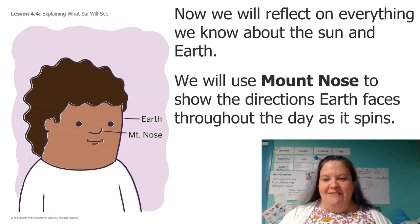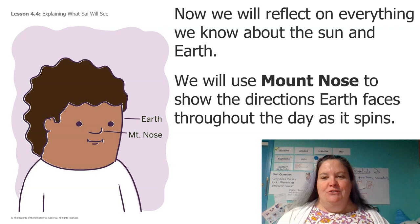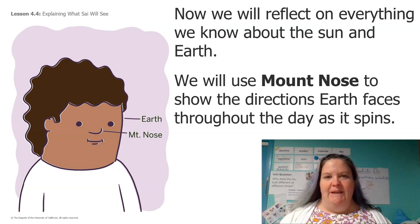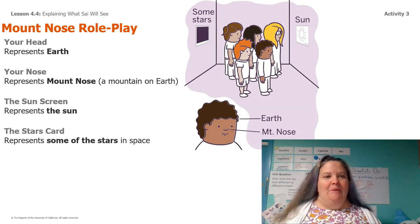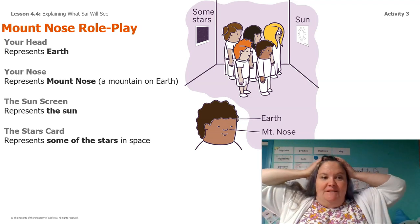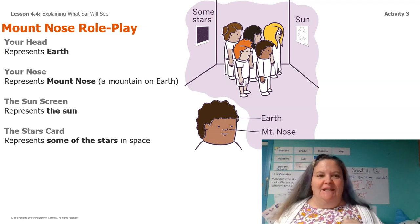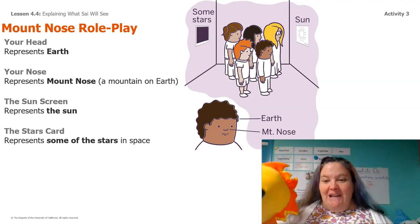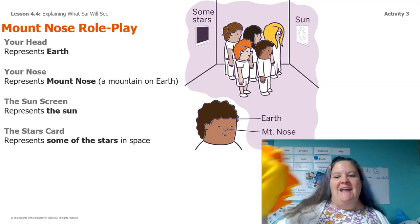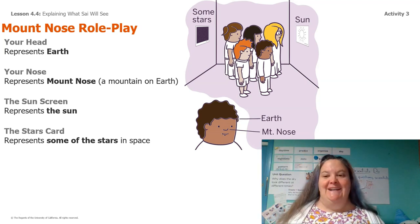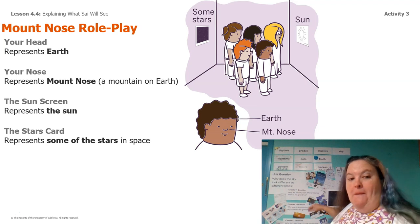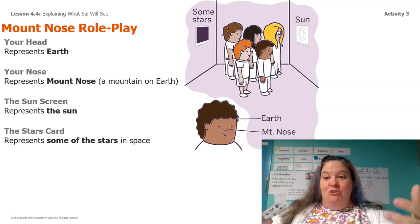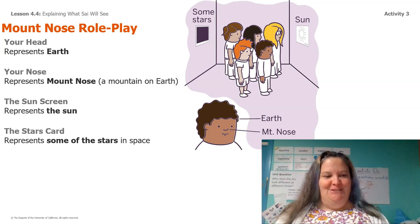We're going to do our Mount Nose activity one more time to show the directions earth faces throughout the day as it spins, to help us really remember where the sun is in the sky. So your head represents the earth, your nose is Mount Nose, and the screen is going to be the sun. I put a sun on the slide instead of using the puppet, and I have a stars card behind me. Even if you don't have a stars card, anytime you're not looking at the screen, imagine there are stars behind you.